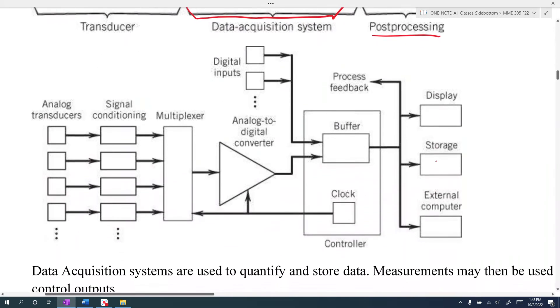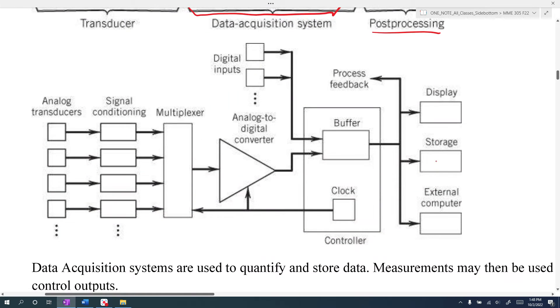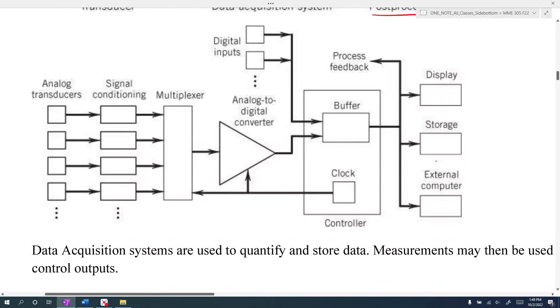So what a data acquisition system typically looks like is we have our transducer, and that transducer goes into some signal conditioning system. So typically we have filters, such as low-pass, high-pass filters, and we typically have amplifiers.